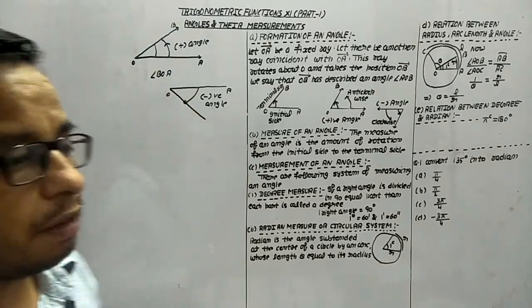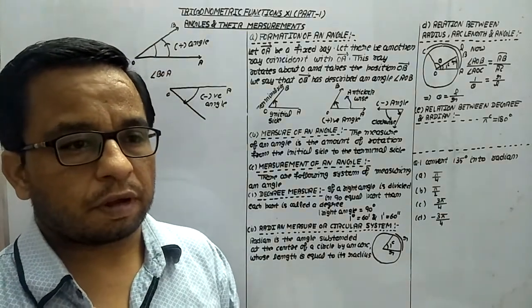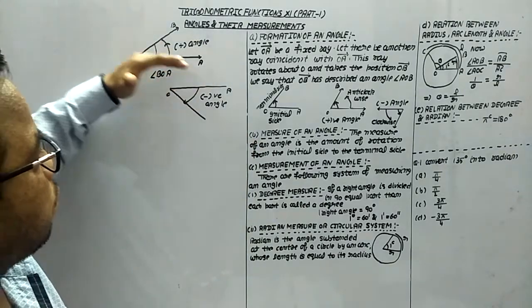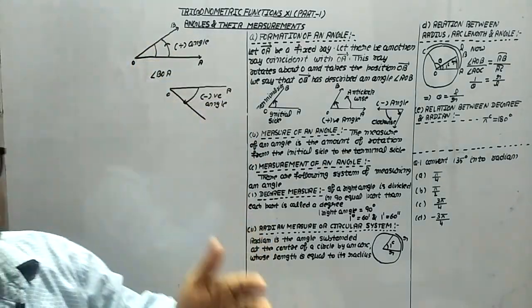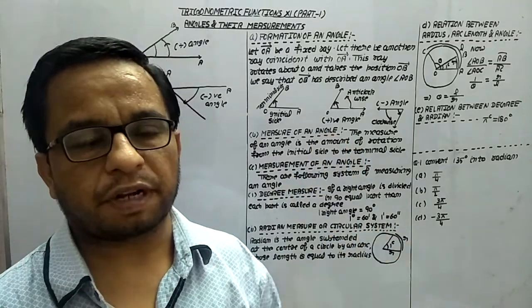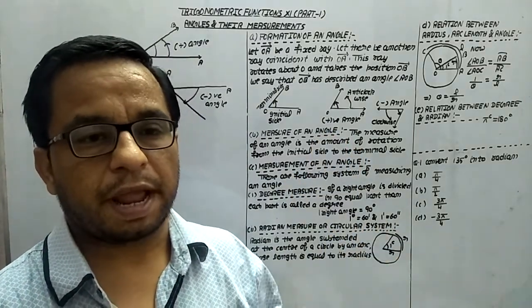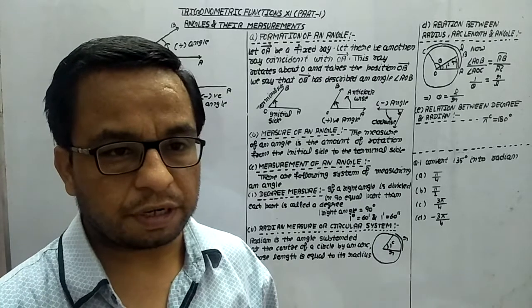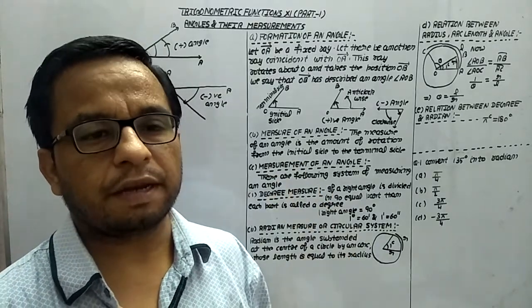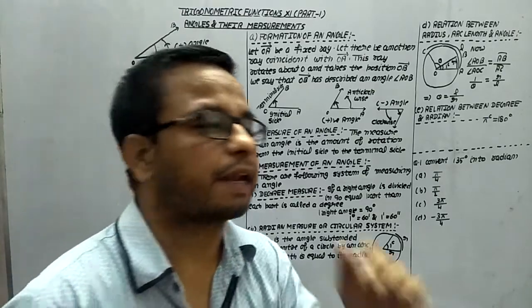There are two types of angle. Number one: if with respect to the fixed ray, rotation is in anti-clockwise sense, then whatever angle is created is a positive angle. And if it is rotation in clockwise sense, then the angle formed is known as the negative angle.